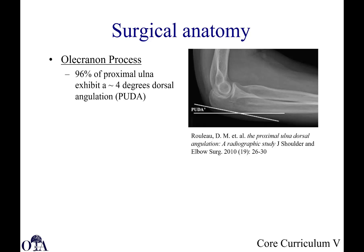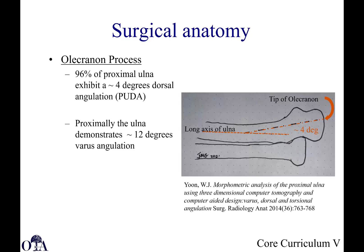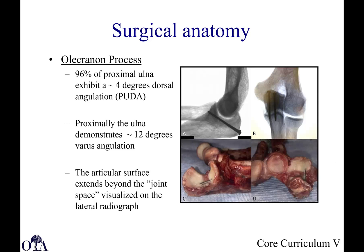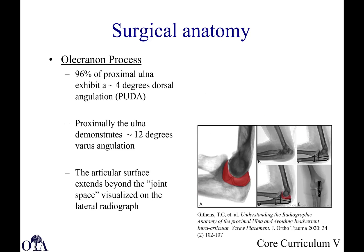Looking at the olecranon process, along the dorsal cortex of the ulna, there is about 4 degrees of dorsal angulation of the proximal ulna relative to the shaft. On the AP view, the ulna has about 12 degrees of varus angulation. So it's not perfectly straight on either view. Also keep in mind that the articular surface extends beyond what appears to be a flat joint space — those screws could potentially be intra-articular, as demonstrated in this cadaveric example. You must be very cautious of where your articular surface is, as it can extend into the territory shown in red.